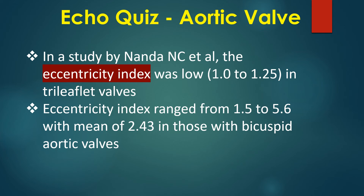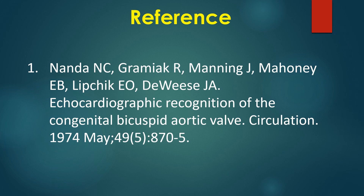In a study by Nanda and colleagues, the eccentricity index was low in tri-leaflet valves. Eccentricity index ranged from 1.5 to 5.6, with a mean of 2.43, in those with bicuspid aortic valves. A journal reference on echocardiography in bicuspid aortic valve is provided here.